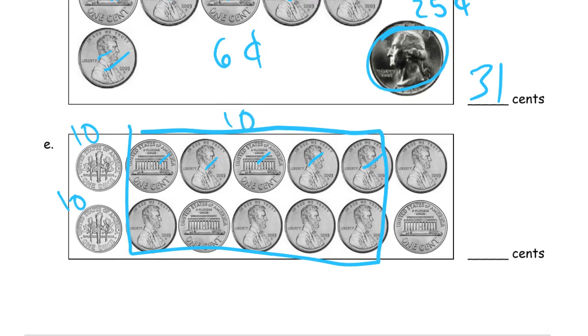And then here we have 2 more. So we have, what do we have here? We have 10, 20, 30, and 2 for 32.